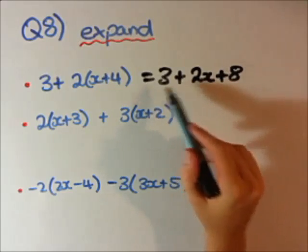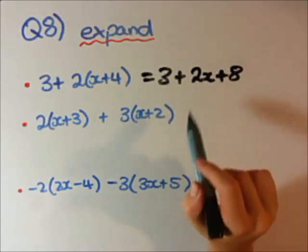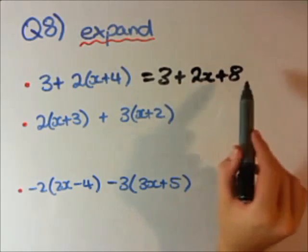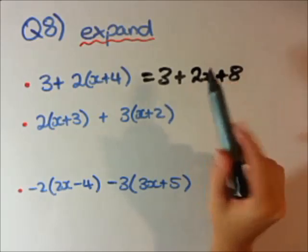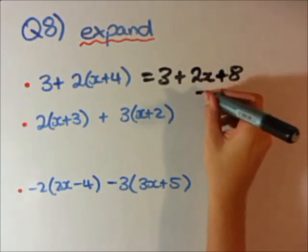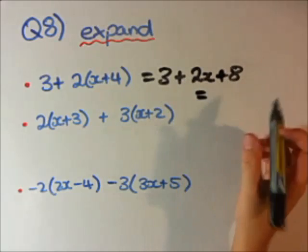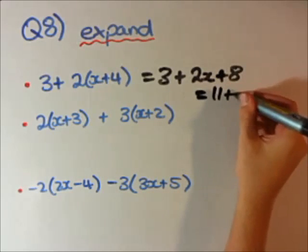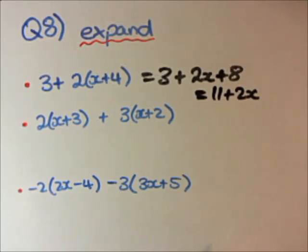This doesn't look like our final answer yet, because we can still add 3 and 8. This 2x is actually complete, we can't do anything more with that. So our final answer can be 3 plus 8, which is 11, 11 plus 2x.